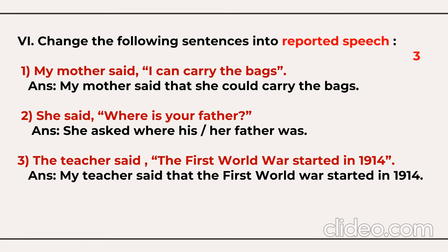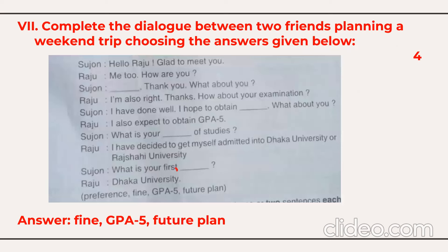Next, complete the dialogue between two friends planning a weekend trip, using the answers given below. You have four words: preference, fine, GPFI, and future plan. For example: 'How are you?' — the answer is 'I'm fine.' Then: 'I've done well. I hope to obtain GPFI.' And: 'What is your future plan for your studies?' and 'What is your first preference?' You need to select the appropriate word to give a meaningful statement — four marks, and it's quite easy.